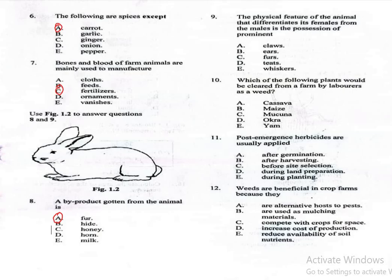Question 9 says, the physical feature of the animal that differentiates its females from the males is the possession of prominent: A. Claws, B. Ears, C. Paws, D. Teats, E. Whiskers. The correct answer is option D.